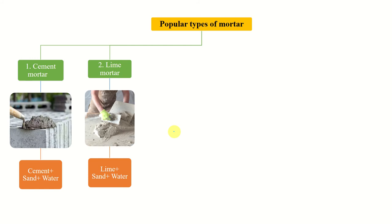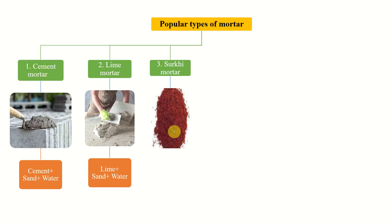Surkhi mortar — surkhi is a brick powder, waste brick powder. It is used instead of sand, or sometimes used along with sand. It is mainly used in lime mortar, and lime, surkhi, sand, and water are the ingredients.